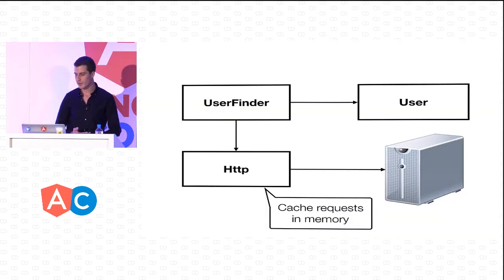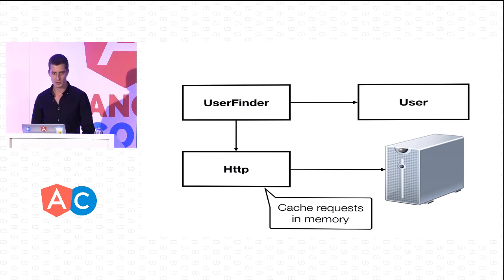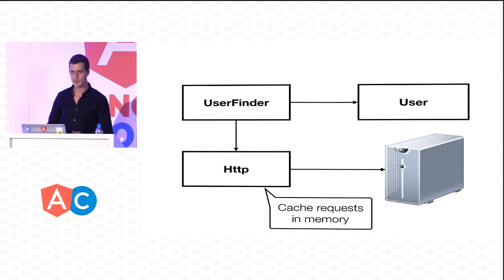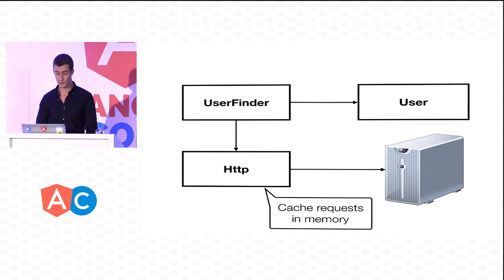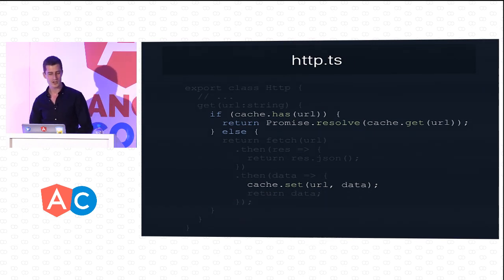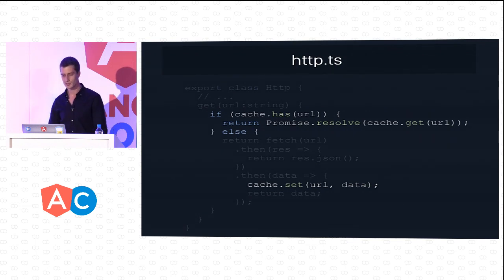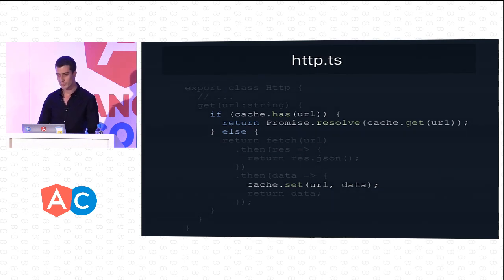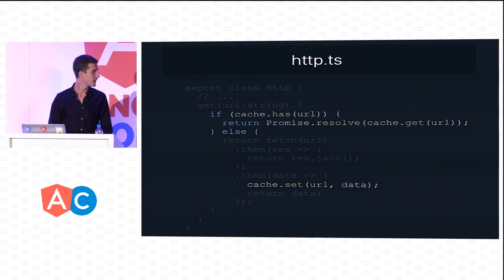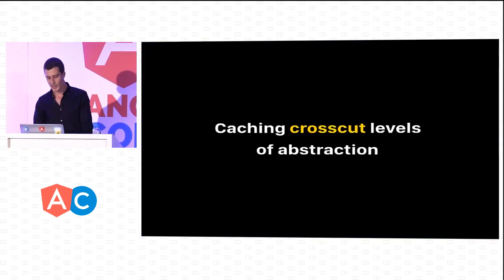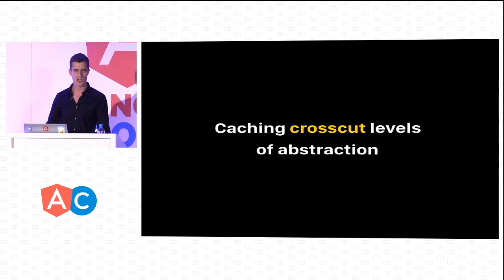Another optimization is to add caching to our HTTP service, which could be used not only for getting users but also for fetching configuration options or other models. We introduce in-memory caching to avoid making two requests for the same data during a single session. First, we check whether there is a cached response for this URL. If found, we resolve a promise with it. Otherwise, we make an explicit GET request using the Fetch API, and after successful completion, cache the response.